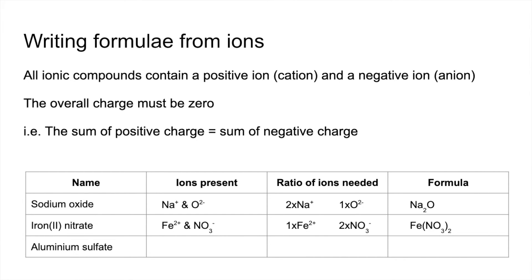And then finally, aluminium sulfate. So the ions present are Al3 plus, SO4, 2 minus. Again, a one to one ratio is not going to work. So we need to get the charges up to 6 plus and 6 minus before they equal each other. And therefore, we need two aluminium 3 plus ions and three sulfate ions. And so the formula of that would be written like this.